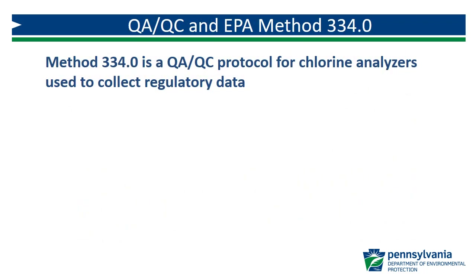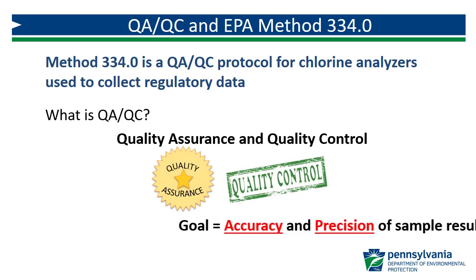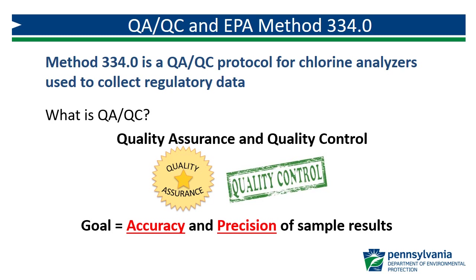EPA Method 334.0 is a QAQC protocol for chlorine analyzers used to collect regulatory data. QAQC refers to a program or set of procedures or activities with an overall goal of ensuring that the end product is of a certain quality that meets applicable standards. A QAQC program should include steps to prevent a poor quality product from being produced, as well as ways to identify and correct a defective end product. The goal of a laboratory QAQC program is to ensure the accuracy and precision of any sample results that are produced.